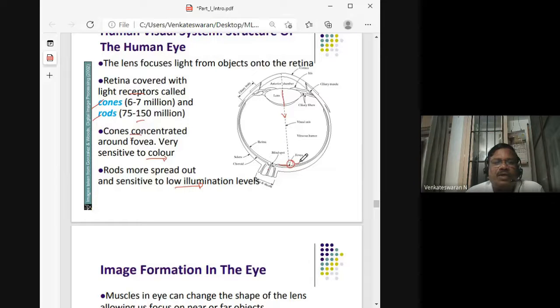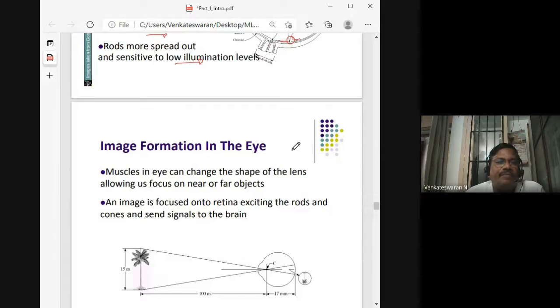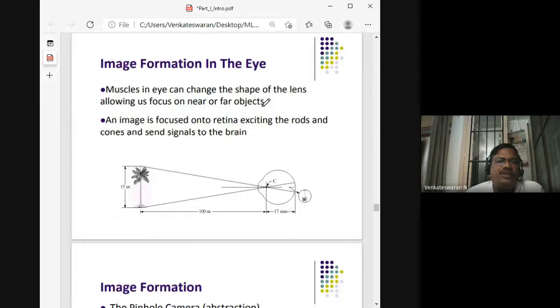They will be able to capture this information and perceive the objects in front of us. Muscles in the eye can change the shape of the lens, allowing us to focus objects exactly on the screen.